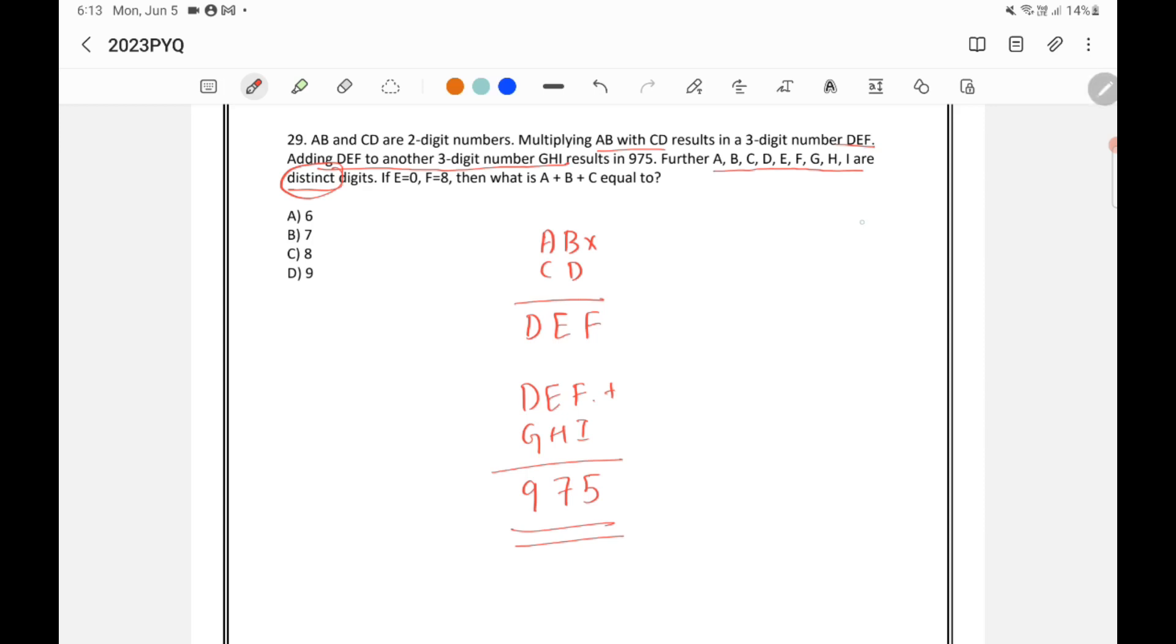So the possible digits are 0 to 9. 0, 1, 2, 3, 4, 5, 6, 7, 8 and 9. So any of this value can come for the given alphabets.